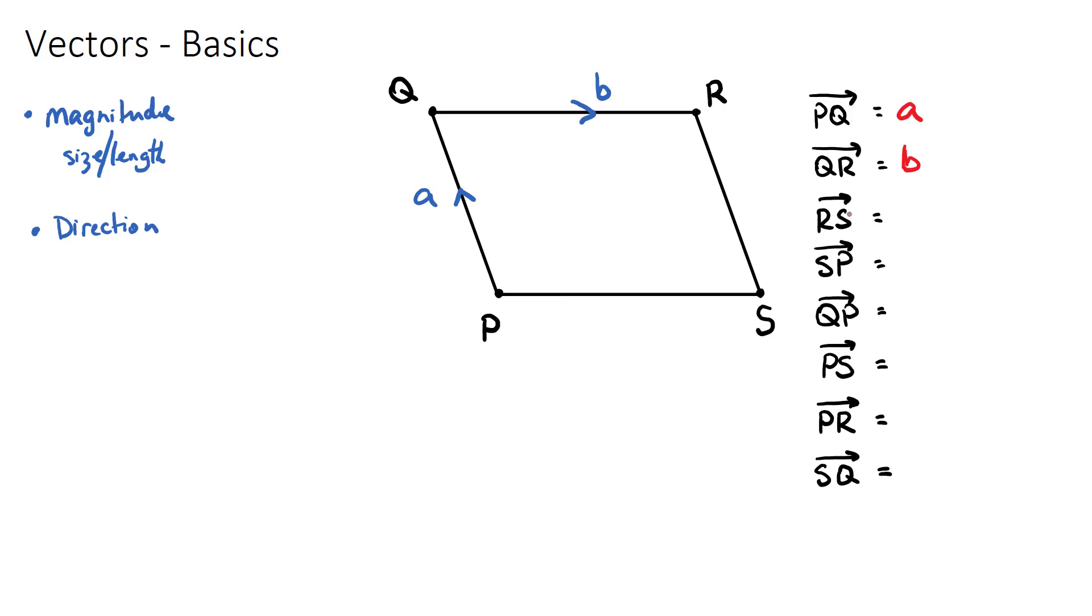What about r to s? Well, there's no vector here, but we now need to think about what a vector is. A vector is the journey. The journey has a distance, which is a magnitude, and a direction. From r to s, it looks like it's the same distance as from q to p, because it's a parallelogram.